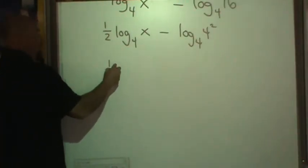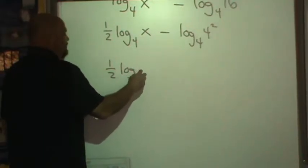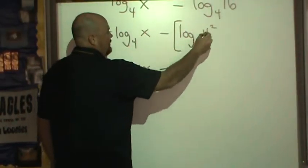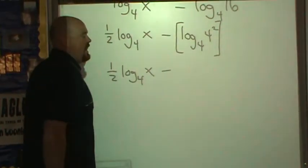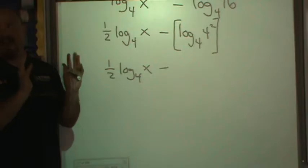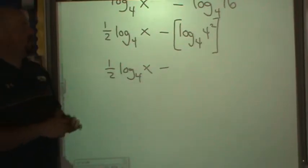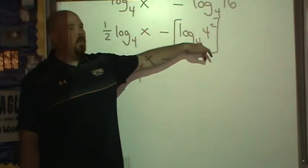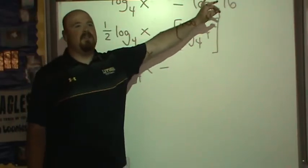So I have 1 half log base 4 of x minus this represents an exponent. That whole thing, the value of that package, that log package, is an exponent. So 4 to the what power is 4 to the second power.